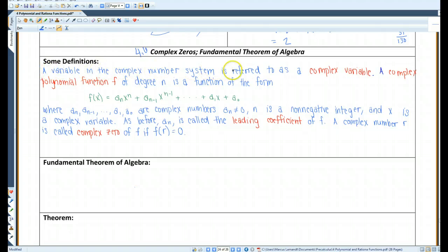A variable in the complex number system is referred to as a complex variable. A complex polynomial function f of degree n is a function in this form. This should be familiar to you by now, where these are complex numbers, so basically it's just like a normal polynomial except you have complex numbers and a sub n does not equal 0. n is a non-negative integer and x is a complex variable. As before, a sub n is called a leading coefficient of f. A complex number r is called a complex zero of f if f of r equals 0.